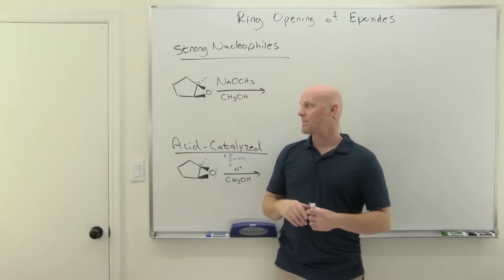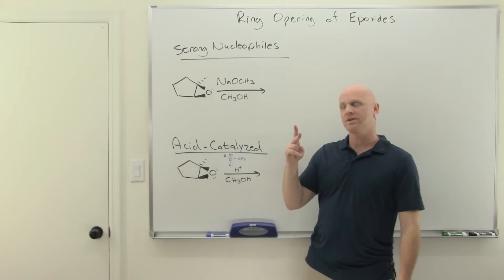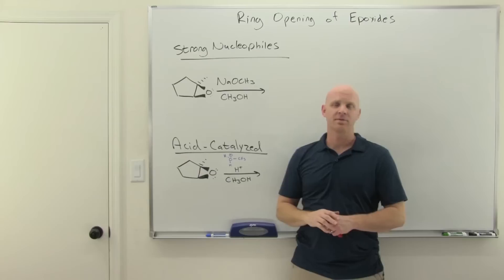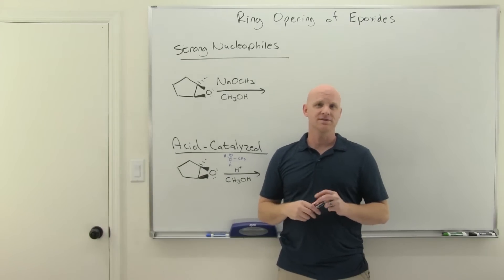Ring opening of an epoxide will be the topic of this lesson, and it turns out it happens under one of two conditions: either in the presence of a strong nucleophile, or acid catalyzed ring opening of an epoxide. We are going to see the difference between the two in this lesson.